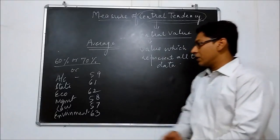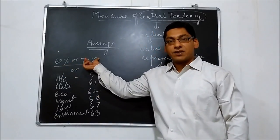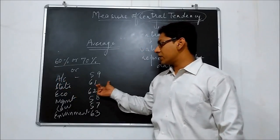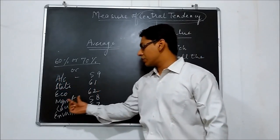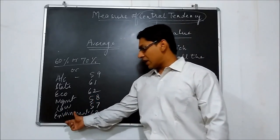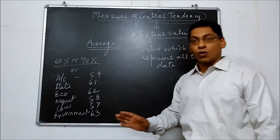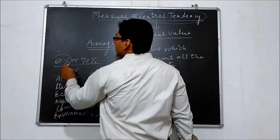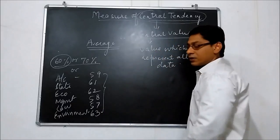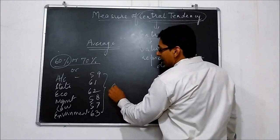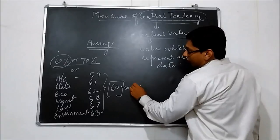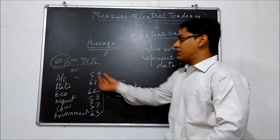What do you say? 60%? 70%? Or in Accounts 59%? In Statistics 61%? In Economics 62%? In Management 58%? In Law 57%? In Environment 63%? No! You just say 60% marks. When you look at all these data, they all lie with 60% marks. Therefore, we say 60%.